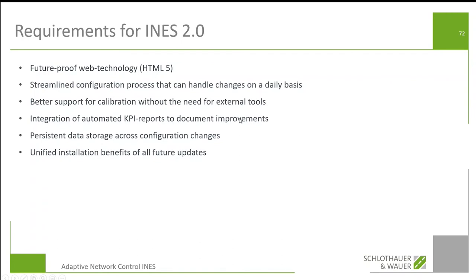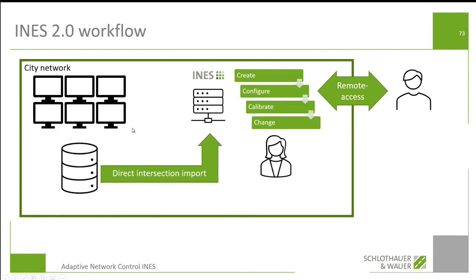So how does the workflow look now? We have a direct intersection import to the INES server. On this INES server you can create, configure, calibrate, and change networks. Creation and configuration is still done by ourselves via remote access, but it's done in the same tool and is accessible also for customer clients if they want to have a look.